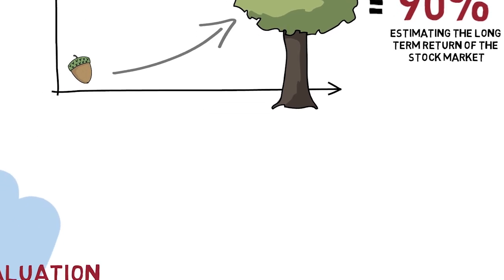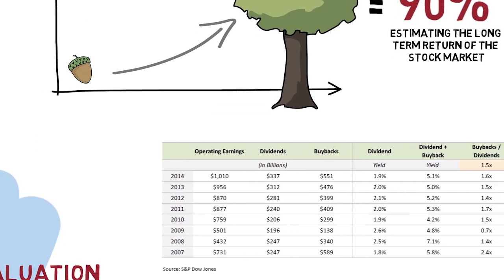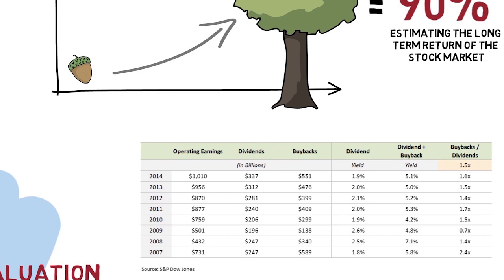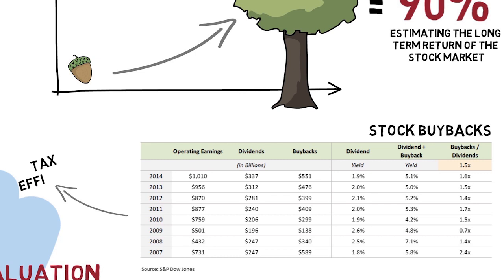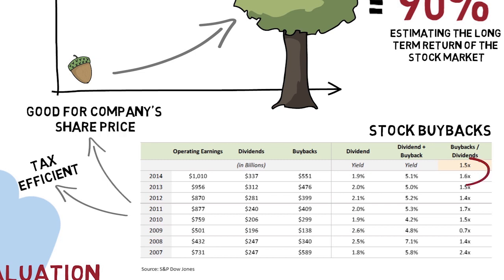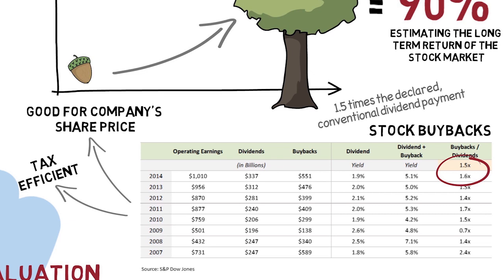Now, let's take a closer look at the starting point: today's dividend yield. In addition to paying out dividends, it's become fashionable, particularly for US companies, to pay out a lot of their cash flow in the form of stock buybacks, on the grounds that it's both tax efficient and good for a company's share price. US companies have been paying this shadow dividend through buybacks in huge size, averaging one and a half times the declared conventional dividend payment.